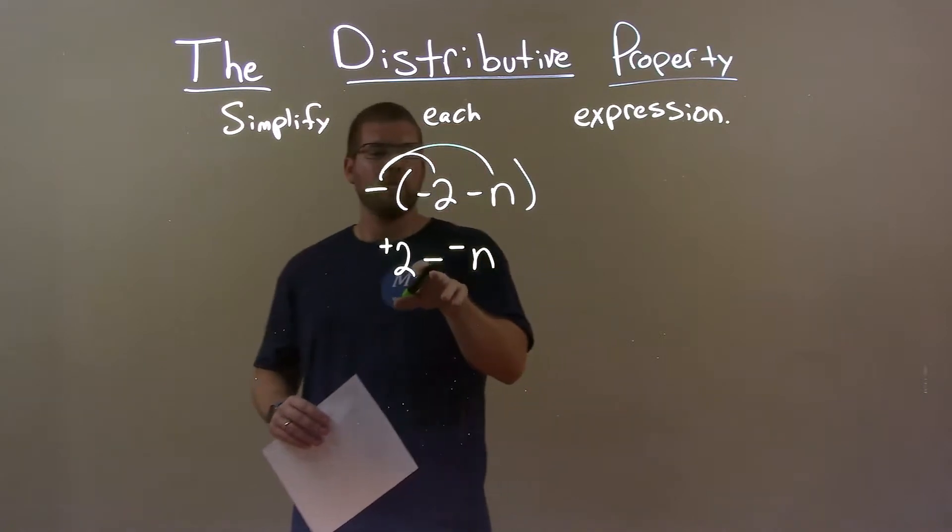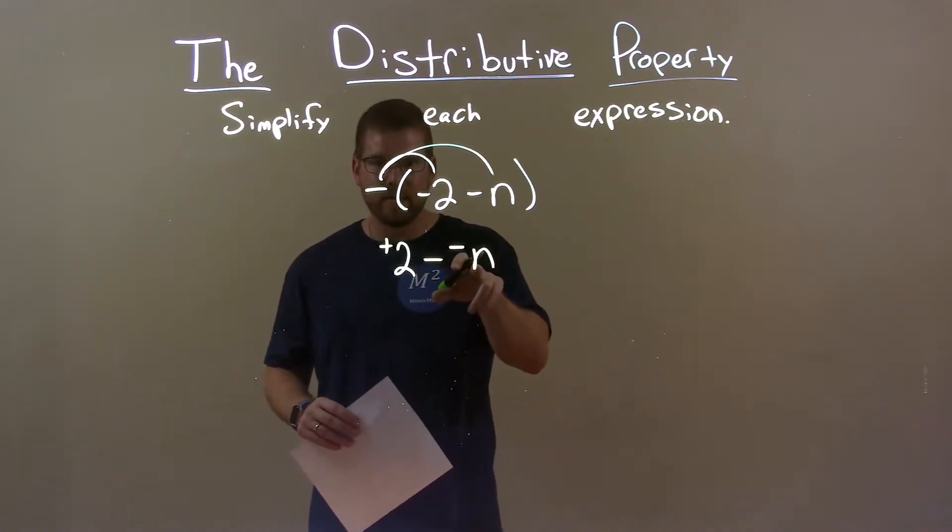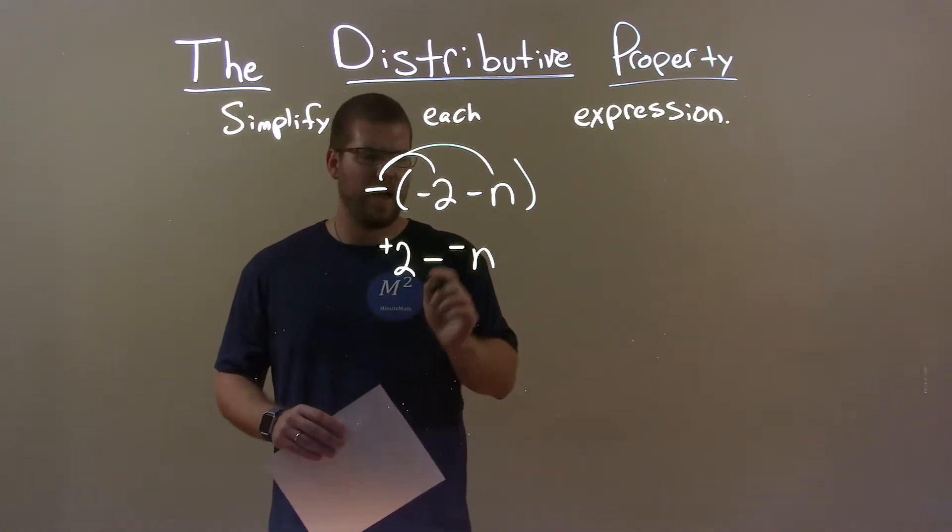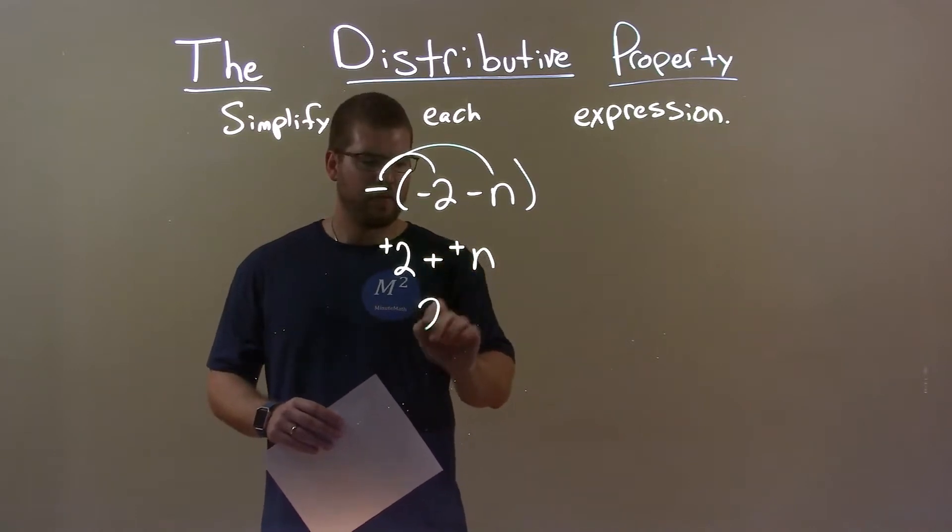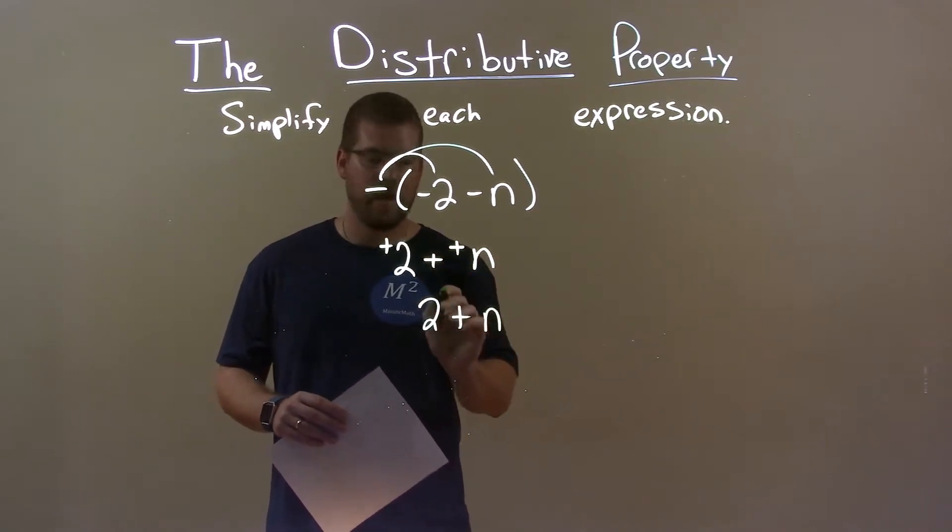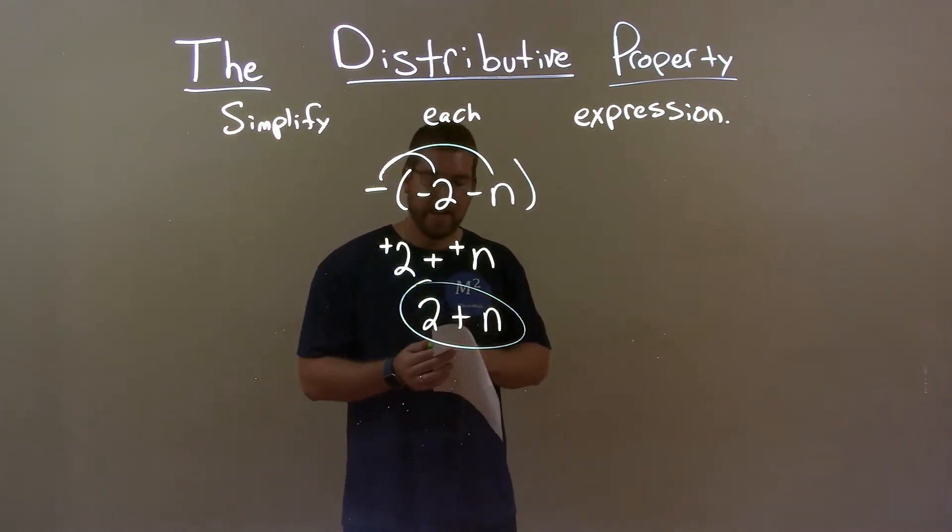Now there's many ways to look at that, but we have a minus a negative here for the n, and that's the same as adding a positive. So my final answer is 2 plus n. So quick recap: we're given negative times negative 2 minus n.